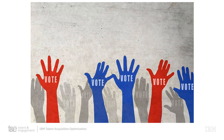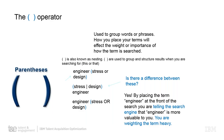It's a refresher for some and brand new for others. The next is going to be the parentheses operator, also known as nesting — it's how we structure different areas. For example: 'engineer AND (stress OR design)' — all three examples on this slide look for the word engineer and either stress or design, so we're looking for a stress engineer or a design engineer.